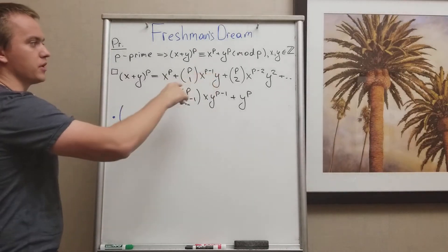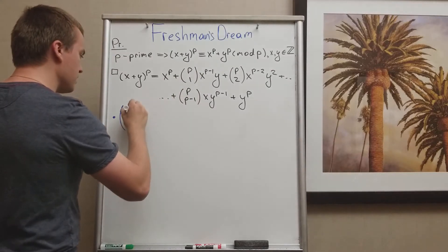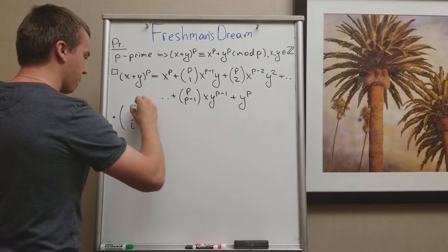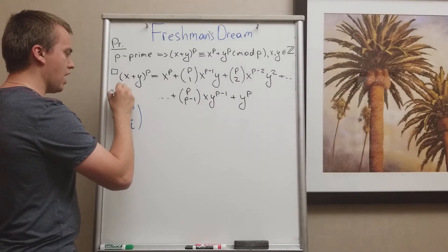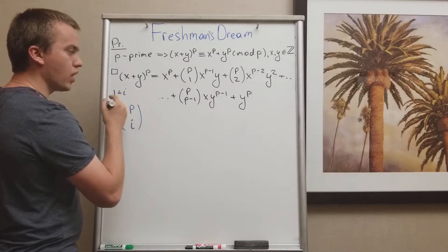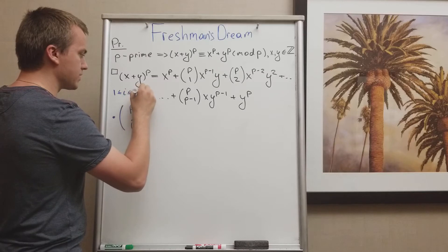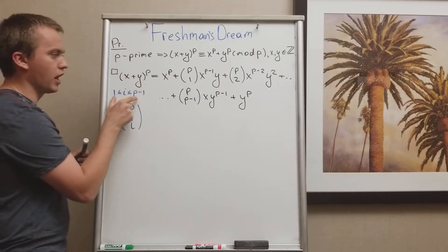And how I'm going to show this? Let's take some term in the middle. So let's take p choose i. And for p choose i, I'm assuming that my i is going to be between 1 and p minus 1. So this is the boundaries for i.